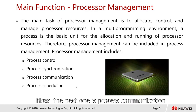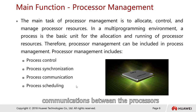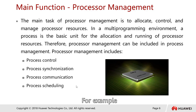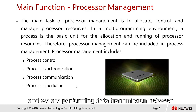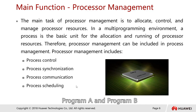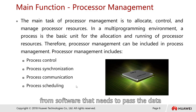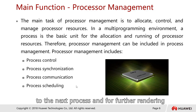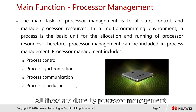The next one is process communication. Process communication refers to the data communications between processes. For example, sometimes we have two different programs performing a data transmission from program A to program B — such as performing some rendering where software needs to pass data to the next process for further rendering. This is called process communication, and all of this is done by processor management.